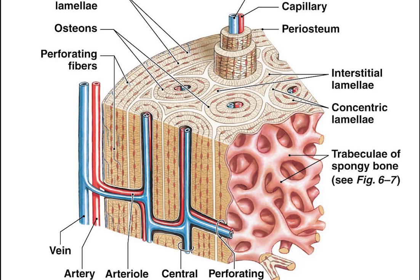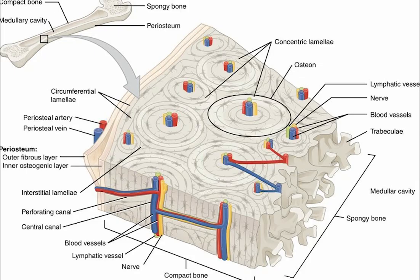Osteoblasts and osteocytes are involved in the formation and mineralization of bone. Osteoclasts are involved in the resorption of bone tissue. Modified, flattened osteoblasts become the lining cells that form a protective layer on the bone surface.